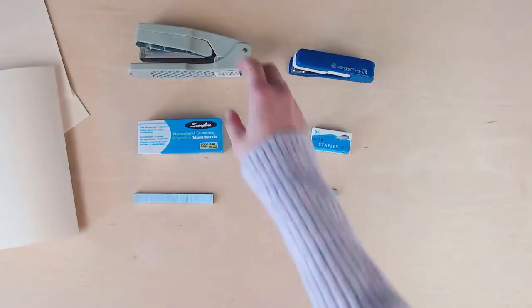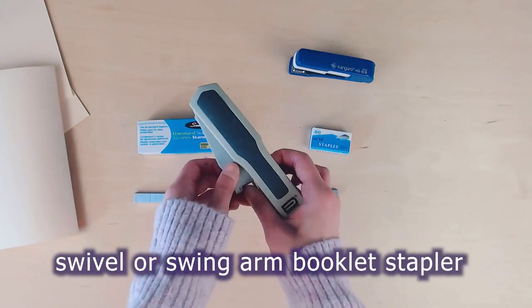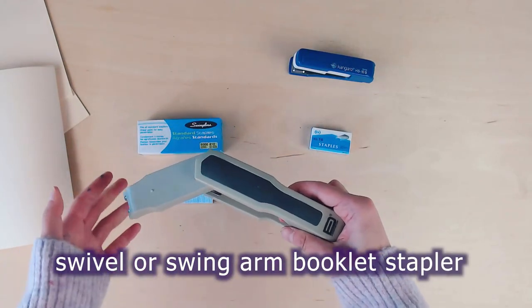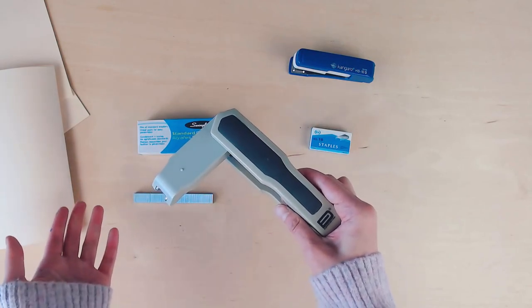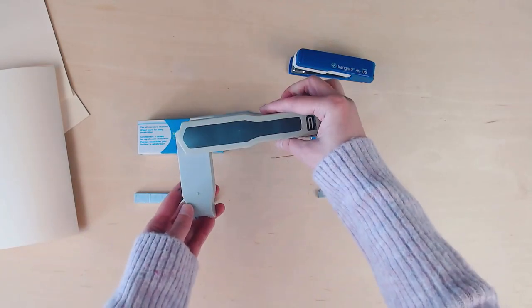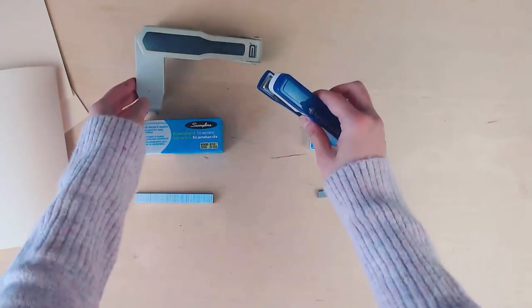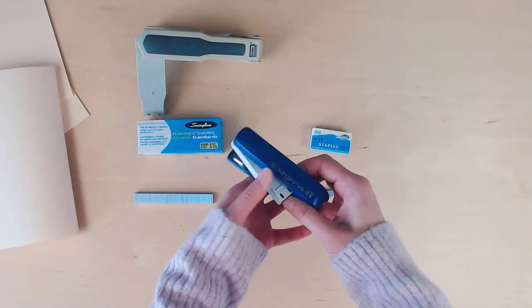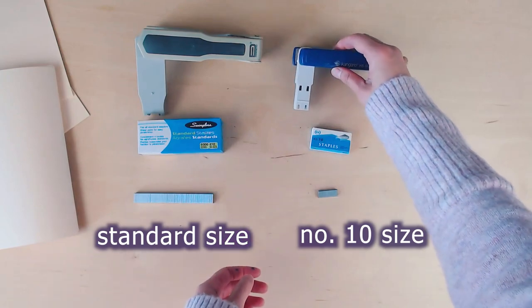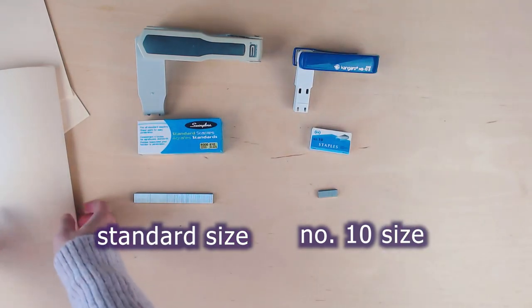The second tool is a swivel or swing arm booklet stapler. This type of stapler is really cool because you can swivel the stapling mechanism by 90 degrees and approach the spine from the side of the paper. I have two sizes here with me. A standard size and a number 10 size.